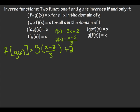Now it's just a matter of simplifying. These will cancel because three over three is one, so I get x minus two plus two. Negative two plus two gives me zero, so I do in fact get x for f of g of x.